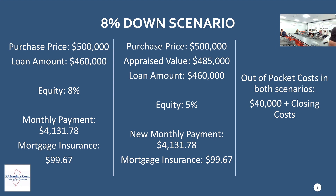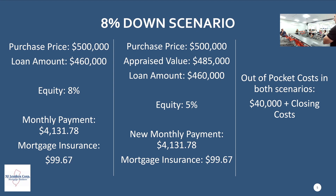When you have someone in this scenario, as long as the client is okay purchasing for $500,000 when it's actually worth $485,000, their monthly payment doesn't change and their out-of-pocket costs don't change. They're still coming with the same $40,000 — home under-appraises, they're still coming with the same $40,000. They're not coming out of pocket for an extra $15,000. Monthly mortgage insurance does not change.